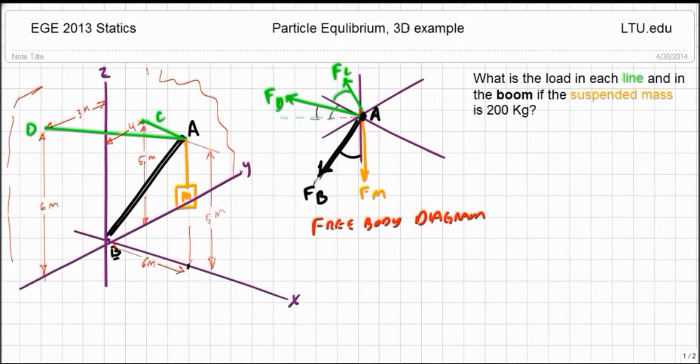So looking at this problem, I see three unknowns, right there, the three forces. But we know that we have, in a three-dimensional case like this, we have three equations: sum of the forces in the X direction, sum forces in the Y direction, and sum forces in the Z direction. So I've got three equations, three unknowns. That's fairly straightforward.